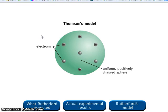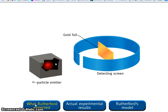Based on Thompson's model, Rutherford expected that the positively charged alpha particles should pass clean through a uniform sphere of positively charged matter with little deflection.